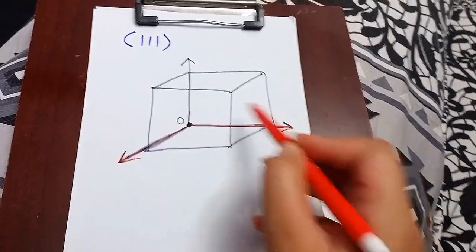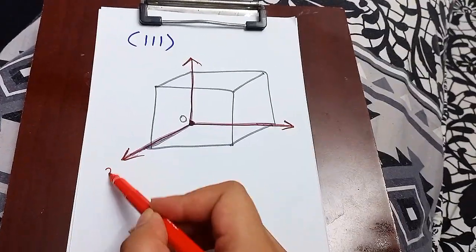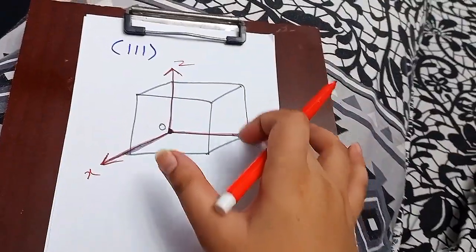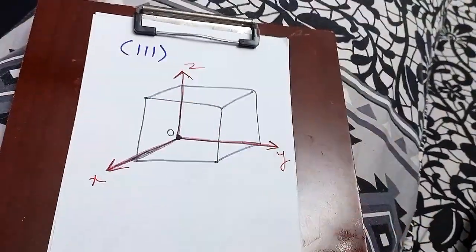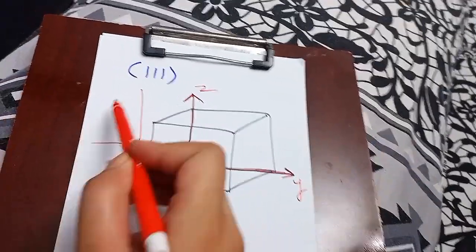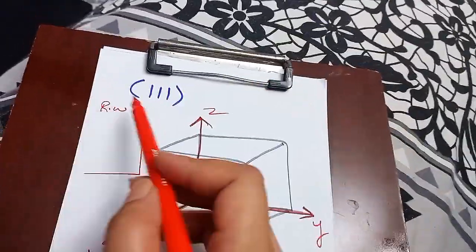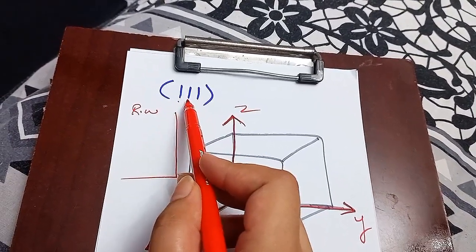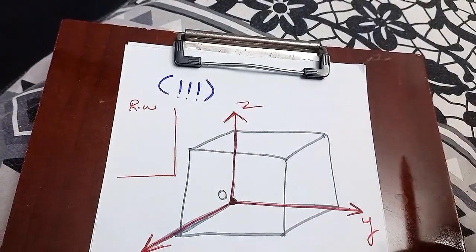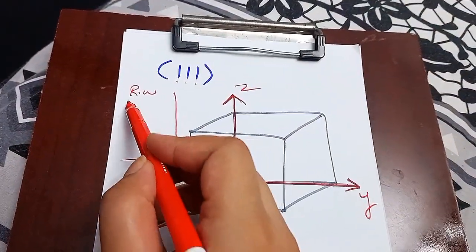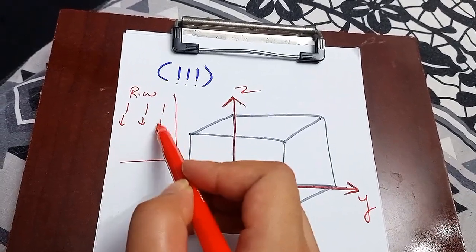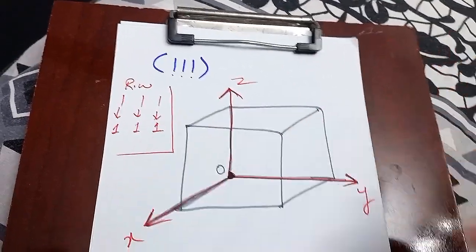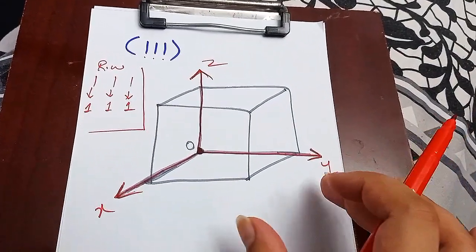The excess lines are highlighted to show that these are the original axis lines and all other lines are just parallel lines to these. In rough work, we take the inverse of each of these indices — X index, Y index, and Z index. The inverse of these indices gives us the intercepts for the plane. Inverse of 1 is 1, inverse of 1 is 1, inverse of 1 is again 1.